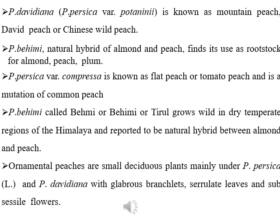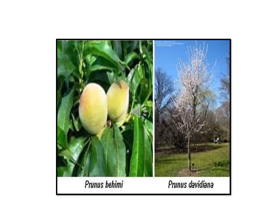Prunus bumi, called Bumi or Tyrol, grows wild in dry temperate regions of the Himalaya and is reported to be a natural hybrid between almond and peach. Ornamental peaches are small deciduous plants mainly under Prunus persica and Prunus davidiana, with glabrous branchlets, lanceolate leaves, and sub-sessile flowers. Here are pictures of Prunus bumi and Prunus davidiana.